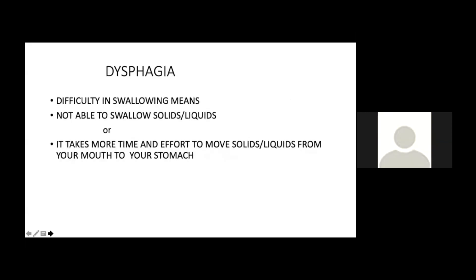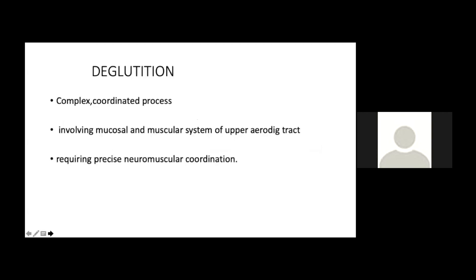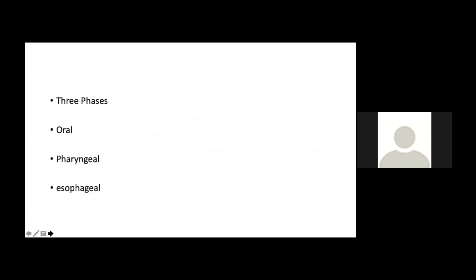Dysphagia is a difficulty in swallowing — either the patient is not able to swallow solids or liquids, or he is taking more time and effort to move solids or liquids from his mouth to his stomach. Deglutition is a complex coordinated process involving the mucosal and muscular system of the upper aerodigestive tract, requiring precise neuromuscular coordination. Swallowing has three phases: oral, pharyngeal, and esophageal.